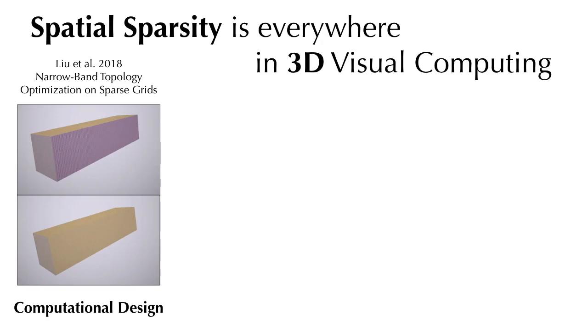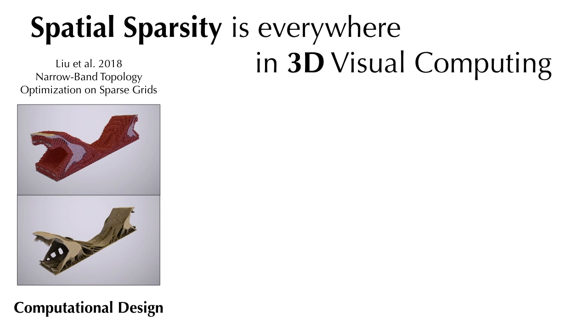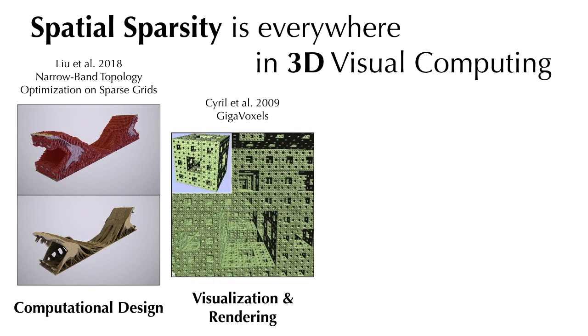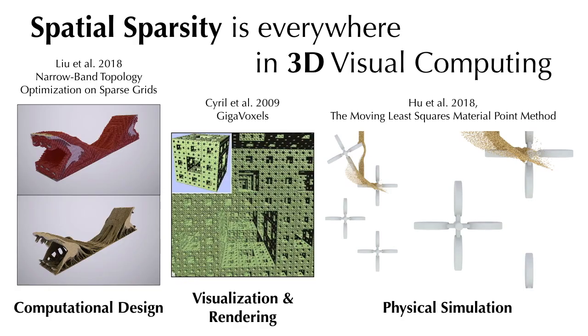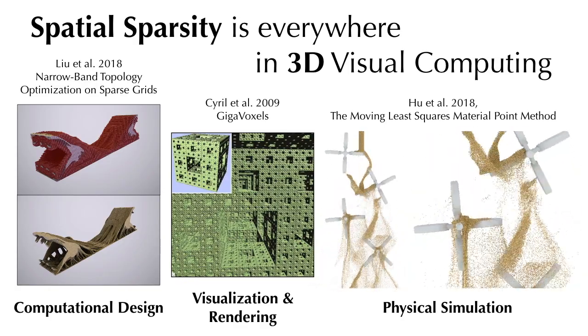In 3D visual computing, spatial sparsity is almost everywhere. Specifically, in computational design, visualization and rendering, and physical simulation, volumetric data are typically sparse and irregular.